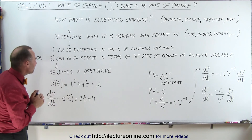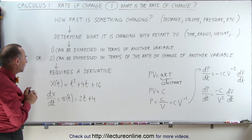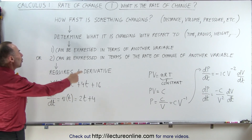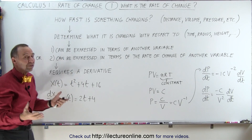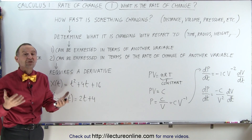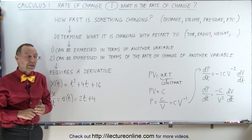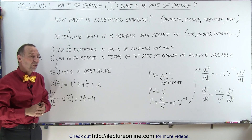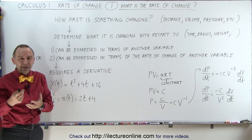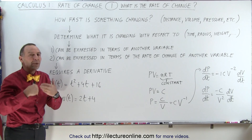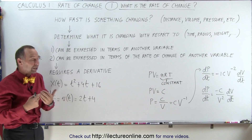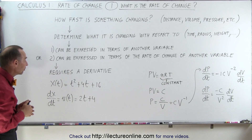So what does that mean? Well, first of all, it requires a derivative. A derivative, by definition, is the rate of change of something — how fast something changes relative to something else, or how much something changes relative to something else.